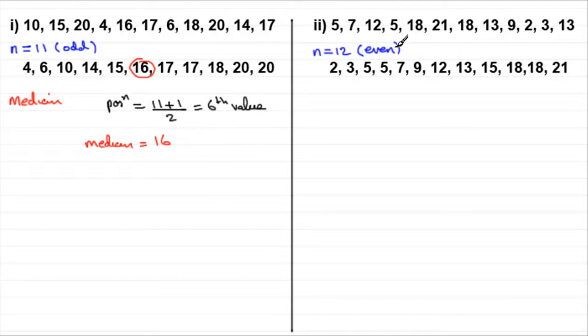Now when it comes to an even number of values, well does it change? The method doesn't really change by much but you'll notice something funny happens. We take the number of observations which in this case is 12, always add 1 and divide by 2. So here we've got 13 divided by 2 which is 6 and a half. So we need the 6 and a half value in that list.